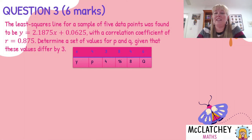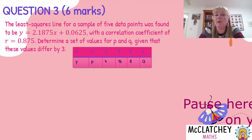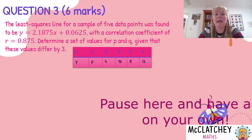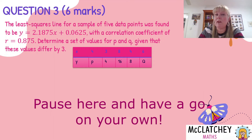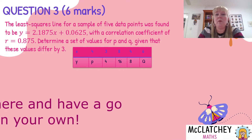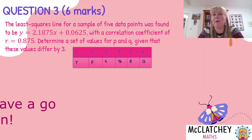Let's crack into that question now. It was the most complex question on the paper. The least squares line for a sample of five data points was found to be y = 2.1875x + 0.0625, with a correlation coefficient of r = 0.875. We've got the equation of the least squares regression line and the value for Pearson's correlation coefficient, and we need to determine a set of values for p and q, given that these values differ by three.